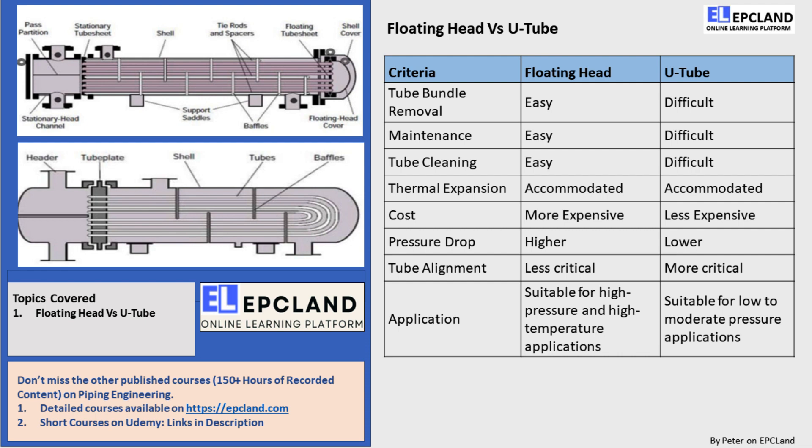So, to summarize, the main differences between a floating head heat exchanger and a U-tube heat exchanger are: tube bundle removal — in a floating head heat exchanger, the tube bundle is easily removable for cleaning and maintenance, which is not the case for a U-tube heat exchanger. Maintenance is easier in a floating head heat exchanger compared to a U-tube heat exchanger. Tube cleaning is also easier in a floating head heat exchanger.